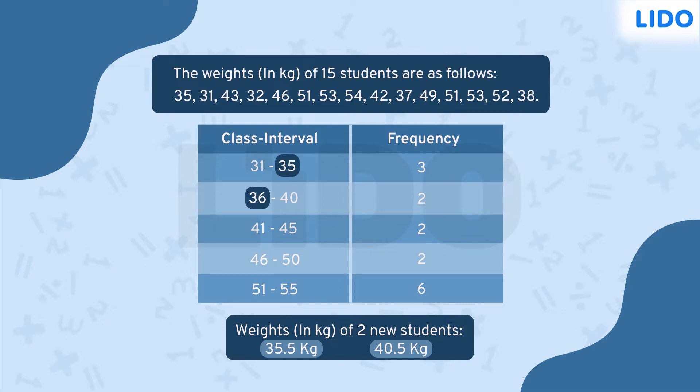So to include them, we will have to modify the intervals in a way that the upper limit of one class is the same as the lower limit of the next class. In other words, we need to convert the discontinuous frequency distribution table to a continuous one. But how do we do that?